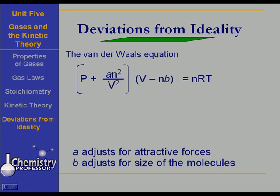Let's have a look at this. Calculate the pressure exerted by 3 moles of chlorine gas held in a 10 liter container at minus 40 degrees Celsius and 1200 torr, and let's use both methods. Now, notice I've given you this problem at a rather chilly temperature and a fairly high pressure. And we're going to use the ideal gas law and the van der Waals equation and compare the results.